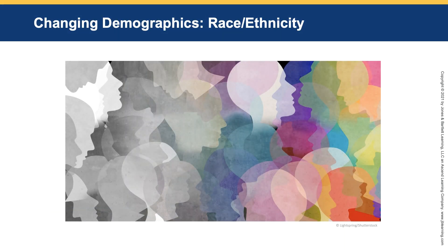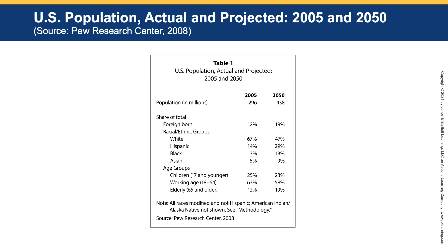We are in the midst of changing demographics. Starting with race and ethnicity in the United States: projections indicate that by 2050, our population will be 438 million, with racial and ethnic group shares dramatically changing. Our Hispanic population will almost double from 14% to 29%. Our white population will relatively shrink from 67% to 47%. Our Black population will remain about the same, and our Asian population will grow more modestly. Keep in mind these estimates were from 2008, and recent immigration policies may impact these numbers.